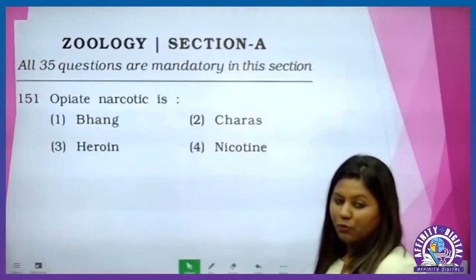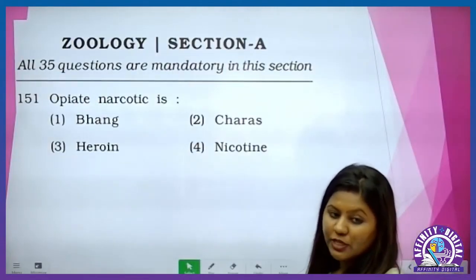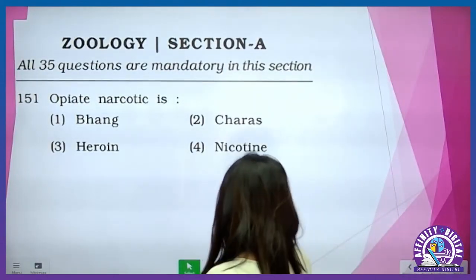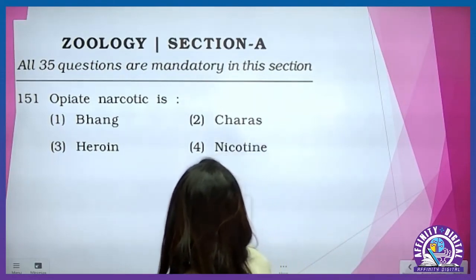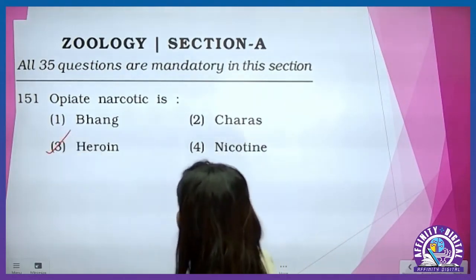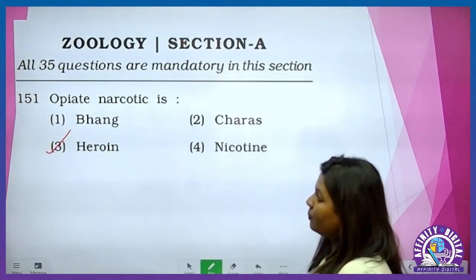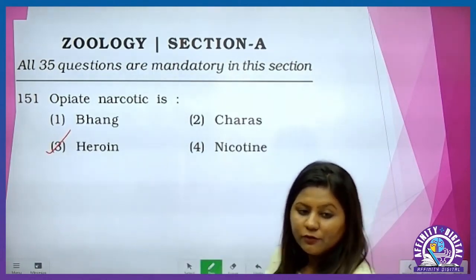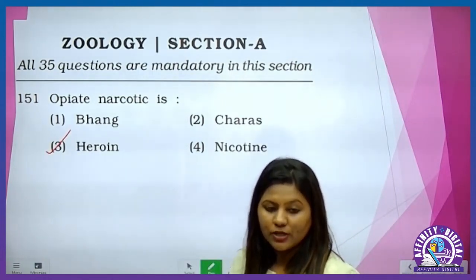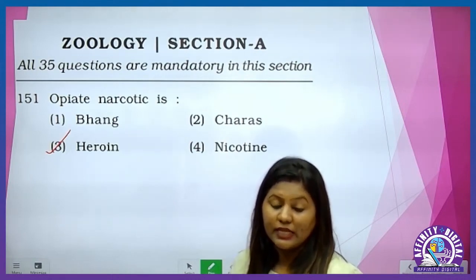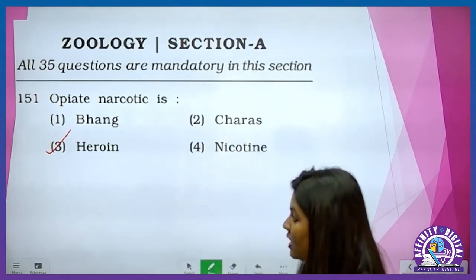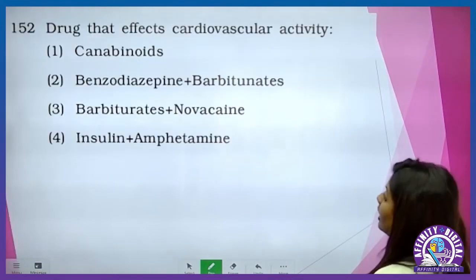Opiate narcotic — opium se derived kiya hua jo drug hai, narcotic — is which one? It is heroin. Opium se jo derived hota hai from the latex of the opium, usse modification karke, dimethylation karke, heroin prepare kiya jata hai, which is a strong kind of drug.